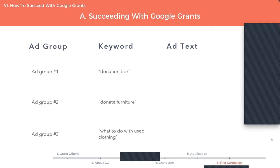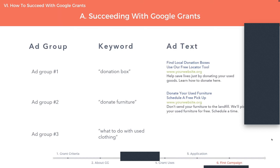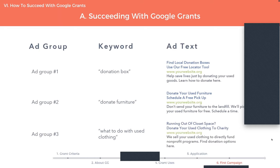For example, I'm going to move them into independent ad groups. You can then write ad text that is specific to each ad group and each keyword. For 'donate furniture' I can write something different — like 'Donate your used furniture, schedule a free pickup.' This wording has more value to someone looking to donate furniture, because they don't want to drive their couch down there but you can give them a free pickup. And because I split out 'what to do with used clothing,' I can take creative liberties and say 'Are you running out of closet space?' — which is perfectly relevant to someone looking to donate used clothing. This is why it's important to break out your keywords into separate ad groups.